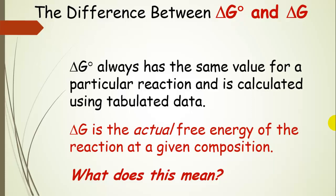What happens if there's a mixture of reactants and products — if the reaction didn't go to completion? This happens a lot. Delta G naught always has the same value for a particular reaction, calculated using tabulated data. The free energy without the naught — which is very important — is the actual free energy of the reaction at its current composition, whatever that composition happens to be. We're going to look at a figure to understand the difference between delta G naught and delta G, because it's extremely important.